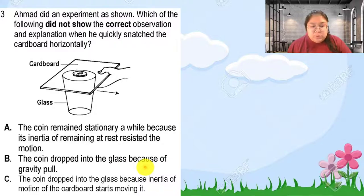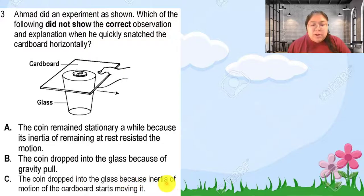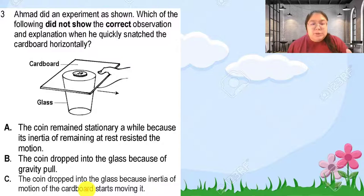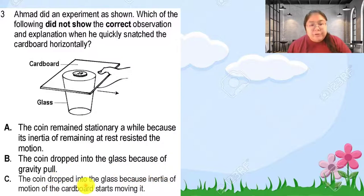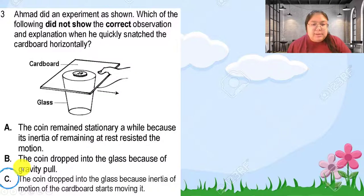For option C: the coil drops into the glass because of the inertia of motion of the cardboard — this is incorrect because we cannot attribute the coil's drop to the inertia of the cardboard. Inertia applies to an object that was never moved; the cardboard is the object being forced to move, so referring to the cardboard's inertia here is wrong. Since the question asks which does NOT show the correct observation, the answer is C.